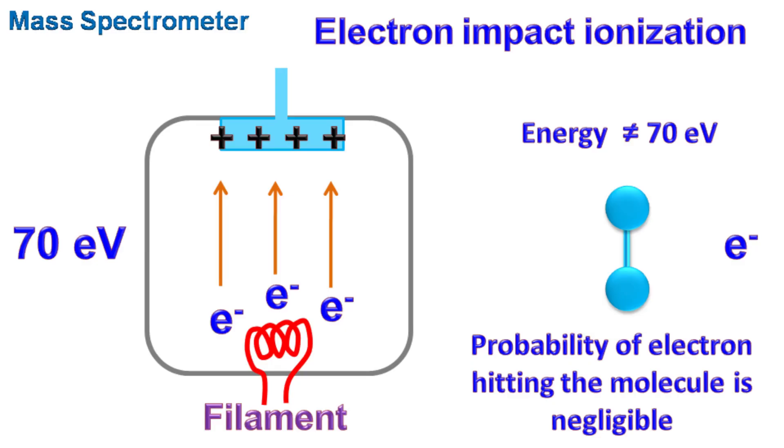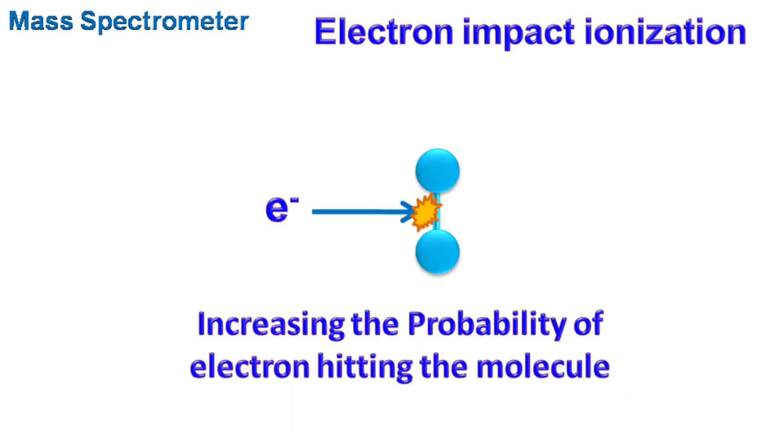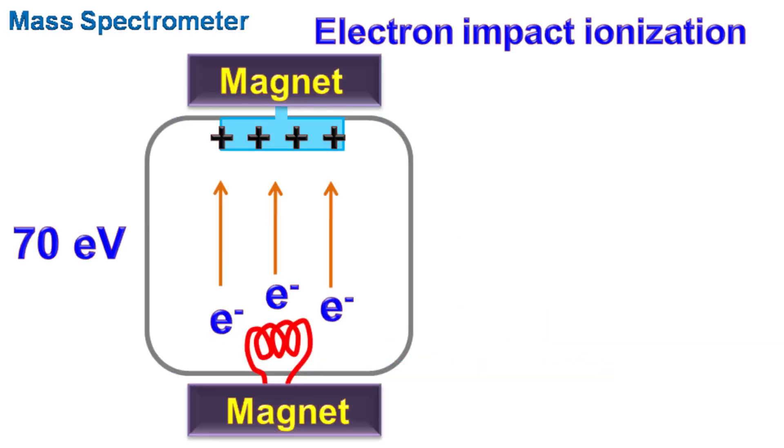Besides keeping energy of electrons to 70 electron volts, to further increase the probability of electrons hitting the molecule, a weak magnetic field is applied parallel to the direction in which the electrons are traveling. This magnetic field makes the electrons move in a helical path. Hence electrons spend more time in the chamber and the probability of electron hitting the molecule increases.